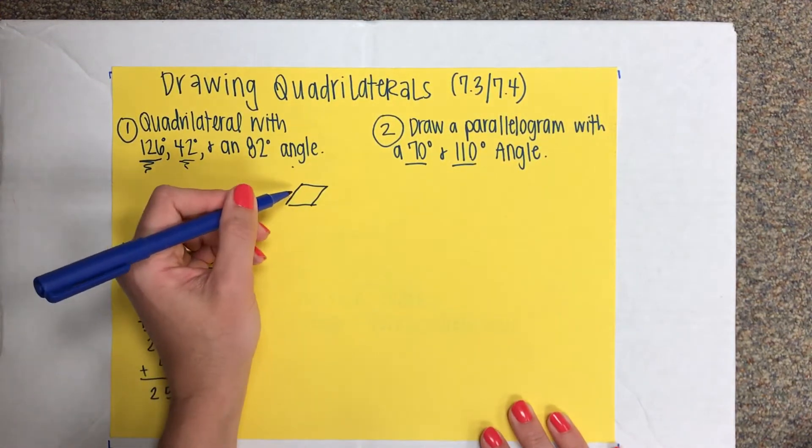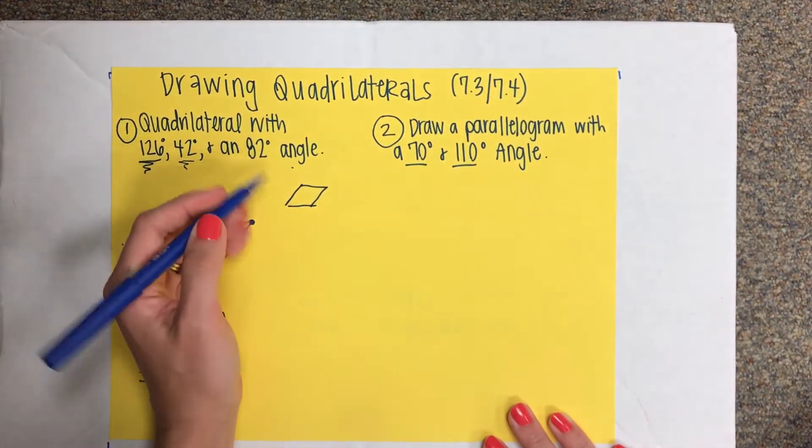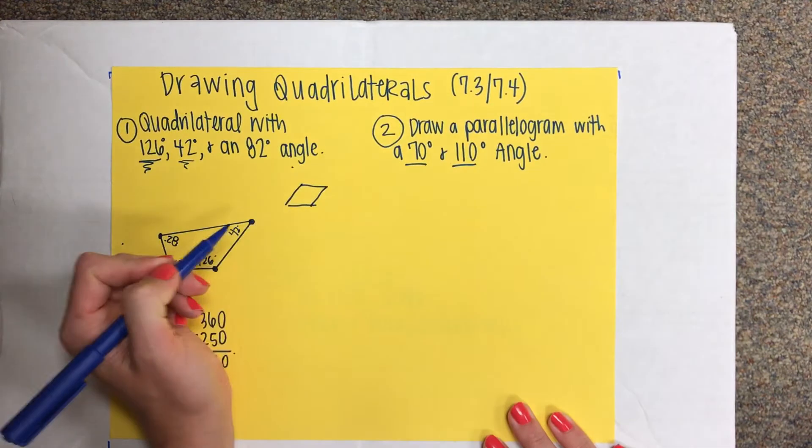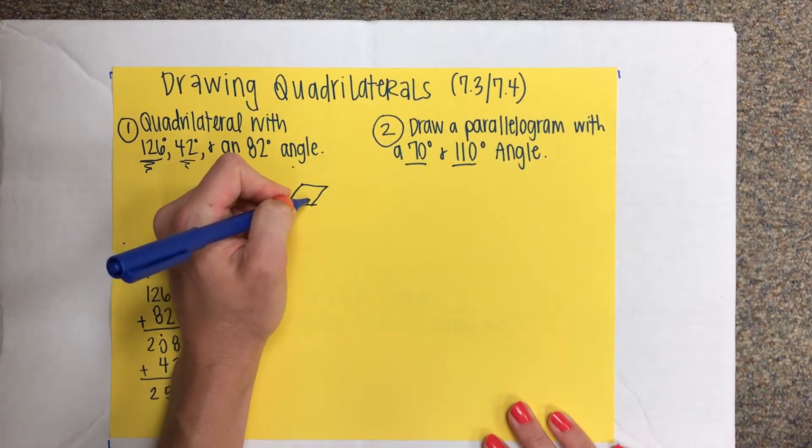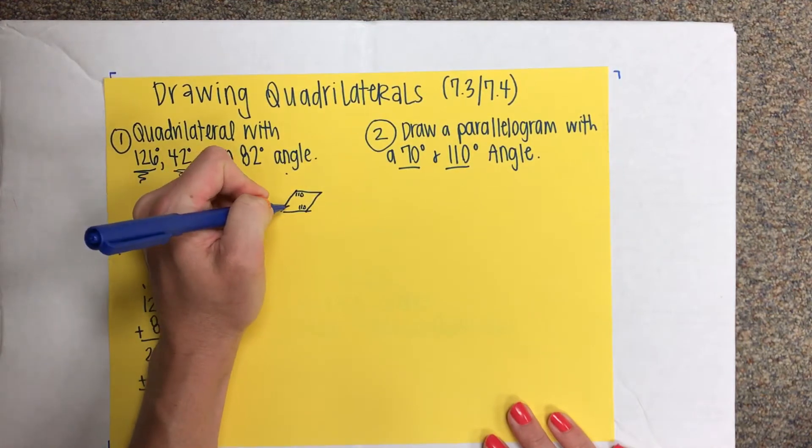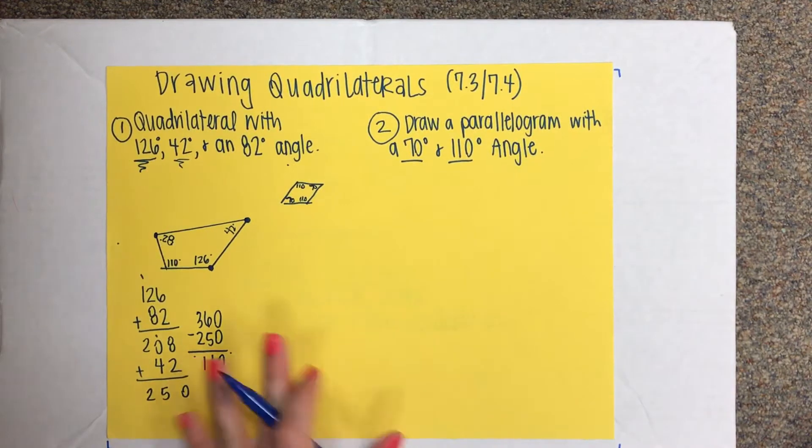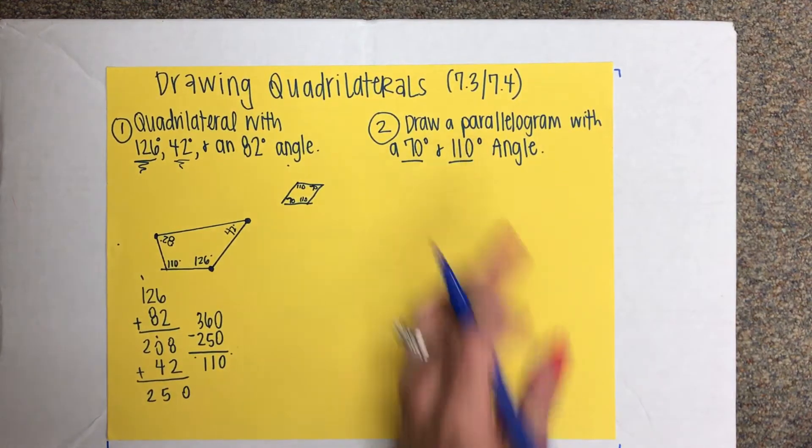And with a parallelogram, you have opposite angles that are the same. So if I was using 70 degrees and 110 degrees, that means 110 would have to be down here and across from it, and then 70 would have to be in the opposite corners. Okay, so this one's going to be a little bit different with a parallelogram, so watch closely.